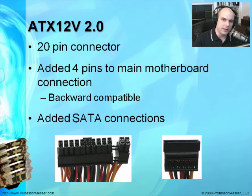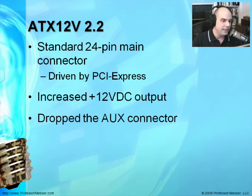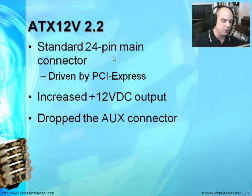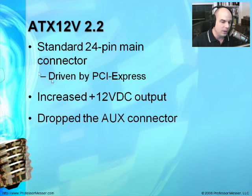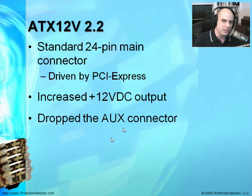One of the latest power supply specifications is the 2.2 standard. It standardizes a 24-pin main connector — there's no question you'll use 24 pins when plugging into a motherboard. This was driven by all the PCI Express connections on modern motherboards. Power supplies are now created with enough power to support those PCI Express slots, with increased 12-volt output. The odd flat auxiliary connector completely disappeared in this specification, so you won't have compatibility problems when buying a power supply.